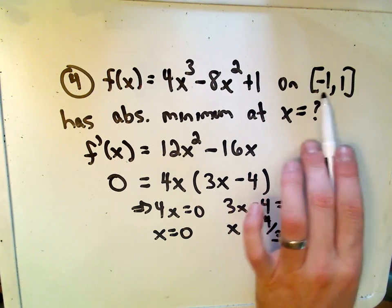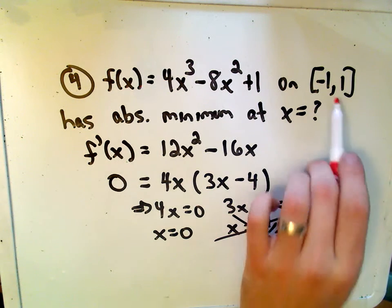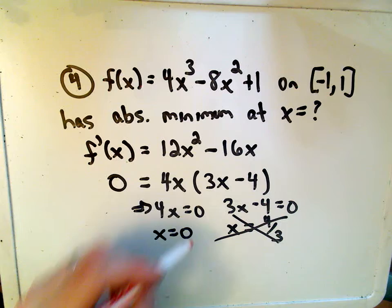Notice 4 thirds doesn't fall in the interval from negative 1 to 1, so we don't use that critical number at all. If our interval had been from negative 2 to 1, we would have included that value.